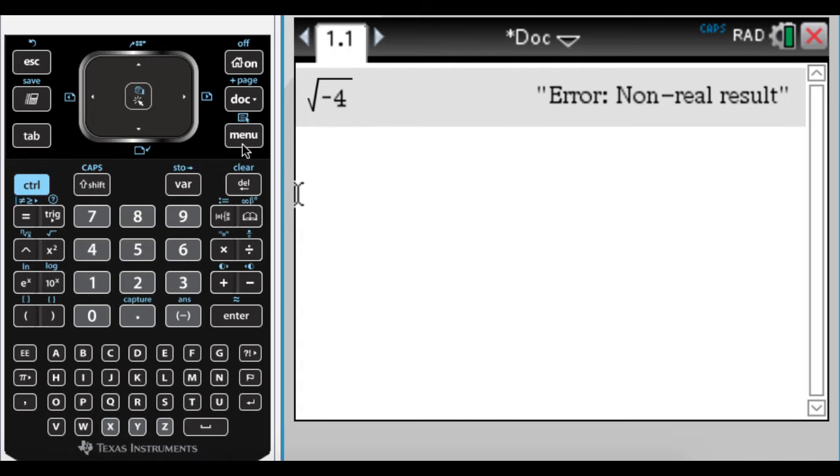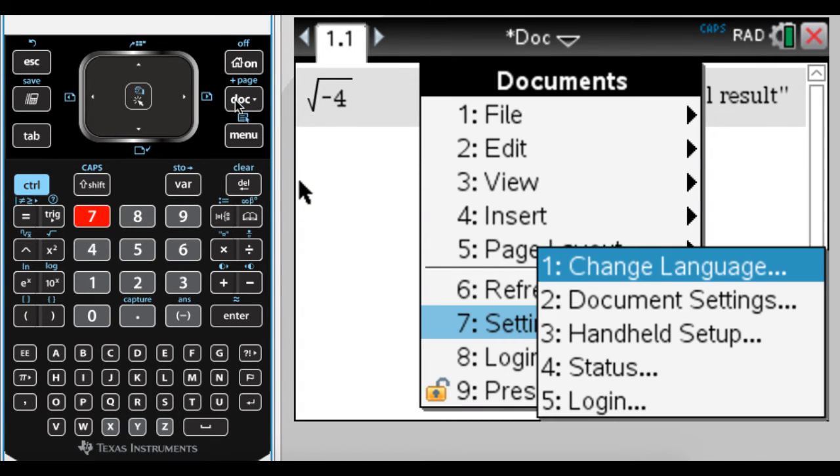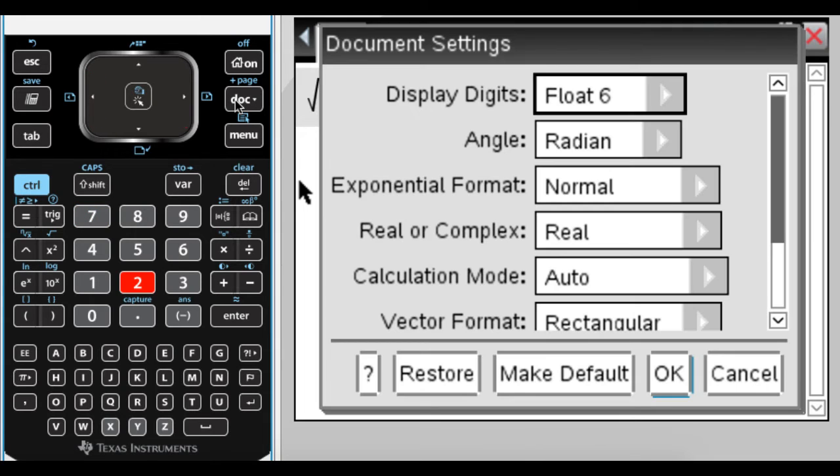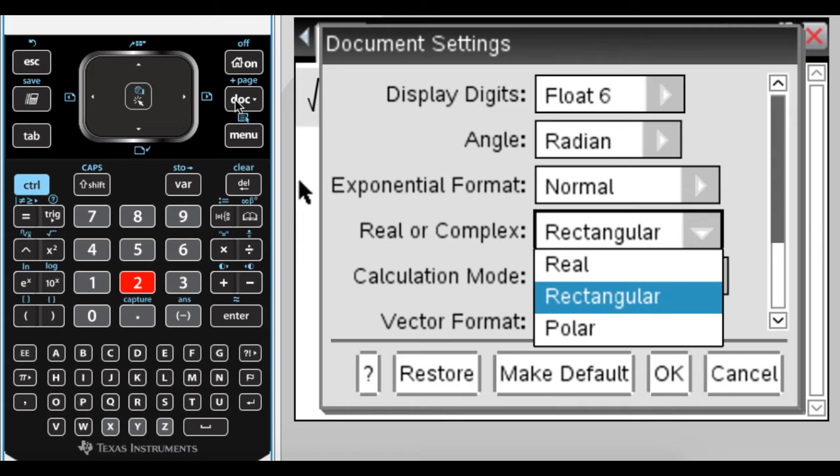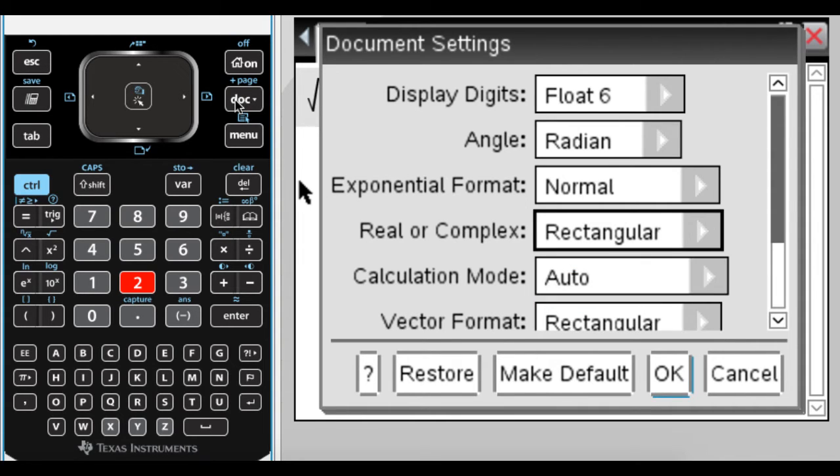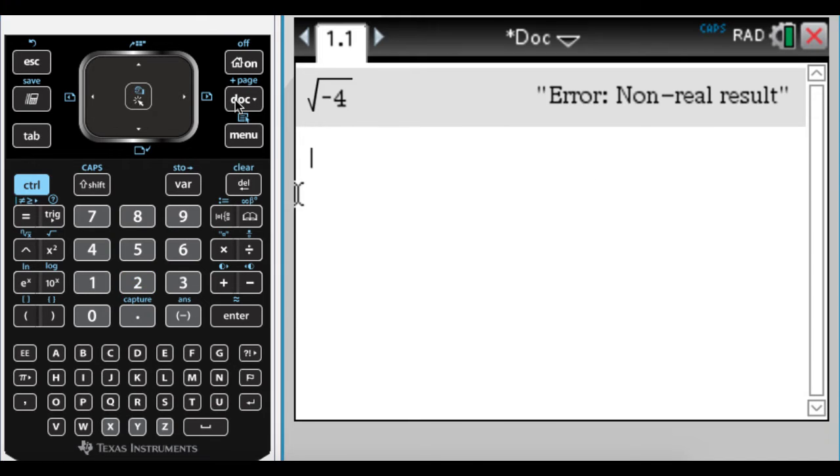So what I'm going to do is I'm going to go into, I like to press doc and then seven for settings and then two for document settings. And then it said to change, so I hit tab to get down to here. It said to change this from real to rectangular or polar. You almost definitely want to change it to rectangular at this point if you're looking this up right now. So I'm going to rectangular and I'm just going to press OK. I don't want to make it the default because I don't always want this to be true.